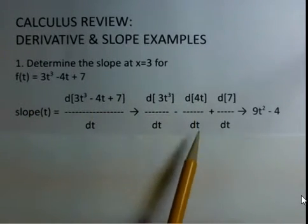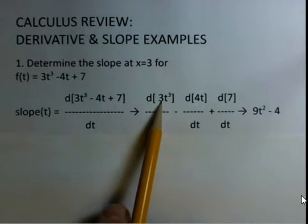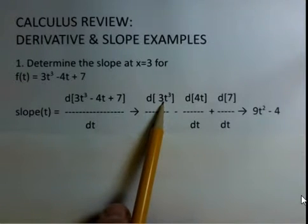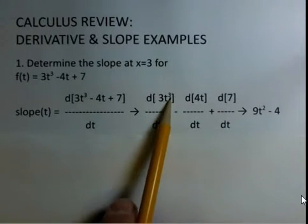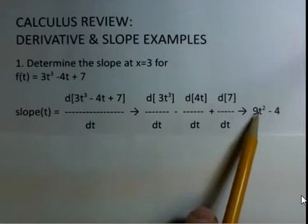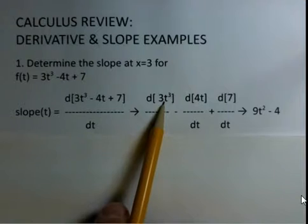The derivative of the 3t³ term, minus the derivative of the 4t term, plus the derivative of the constant term. When we take the derivative, the 3 will come down as a multiplying factor and the power will be reduced to 2, giving us the 9t² term.